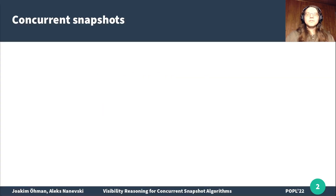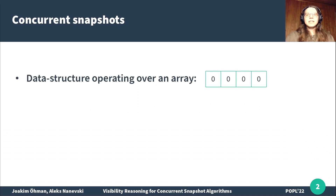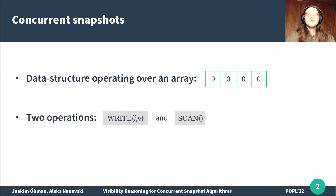Concurrent non-blocking snapshots are a desirable feature. However, implementing this correctly is tricky. A snapshot structure is a data structure representing this feature, operating over an array of some length, and consists of two operations — write and scan — where a write writes a value to a cell in the array and a scan copies and returns the array.